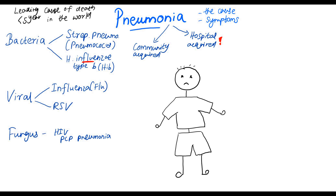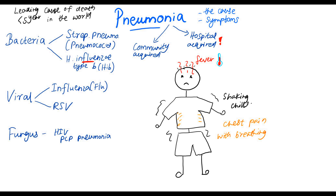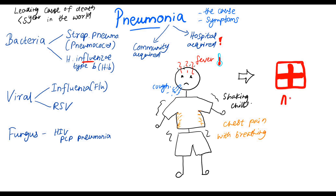Let's look at the symptoms of pneumonia. Since it's an infection, patients can present with fever and they can have shaking chills. Some patients can have chest pain with breathing because of the irritation of the nerves in the lungs, and a common symptom is cough. If you have these symptoms, it is critical that you seek medical attention as soon as possible from your healthcare provider.